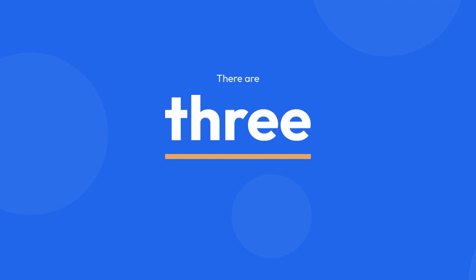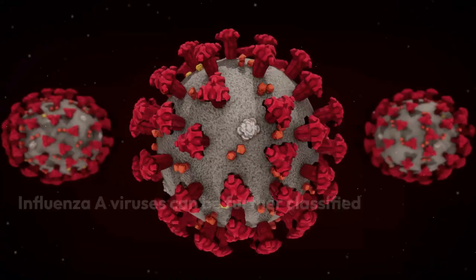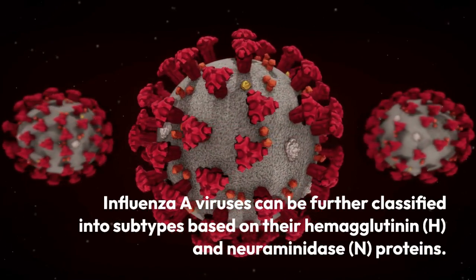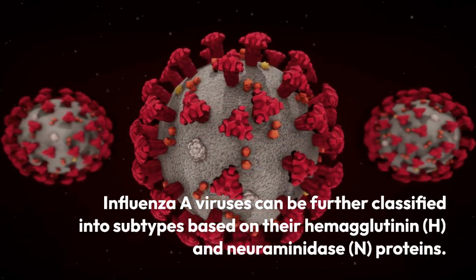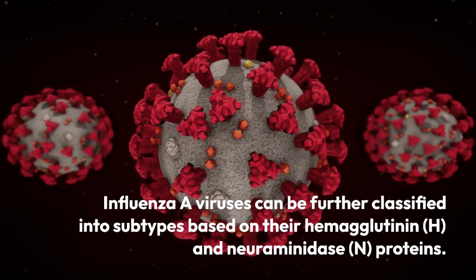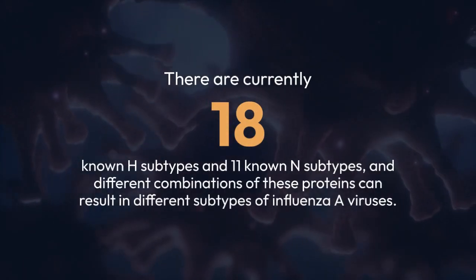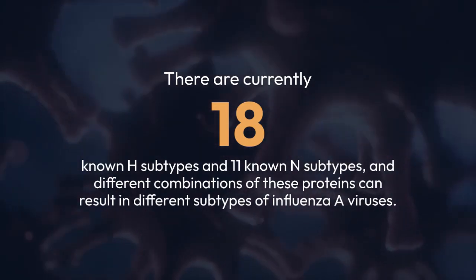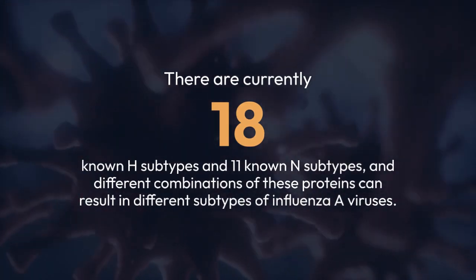There are three main types of influenza viruses: A, B, and C. Influenza A viruses can be further classified into subtypes based on their hemagglutinin (H) and neuraminidase (N) proteins. There are currently 18 known H subtypes and 11 known N subtypes, and different combinations of these proteins can result in different subtypes of influenza A viruses.